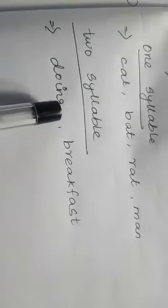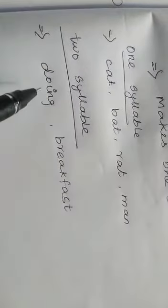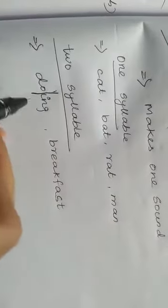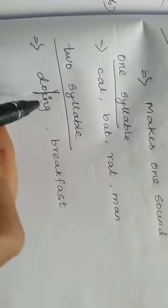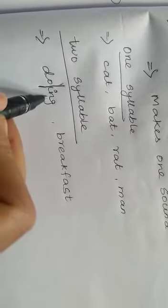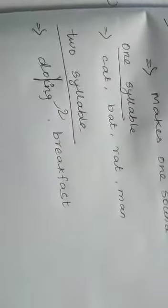Two syllables. Yes, doing. Example, doing. D-O, do. In. Do. In. Doing. So, two syllables. One syllable and another one syllable. So, two syllables.